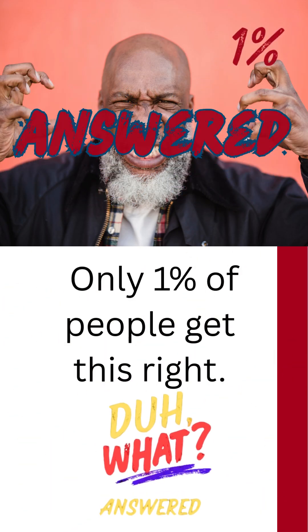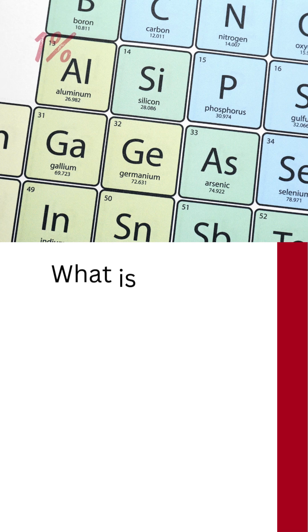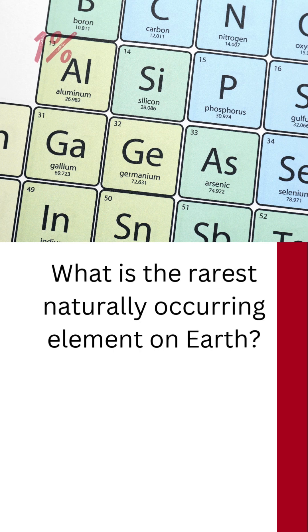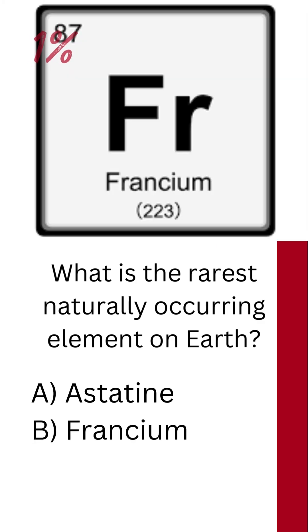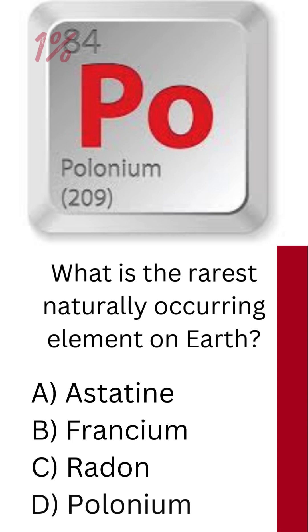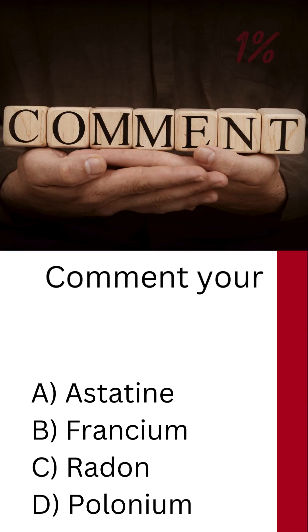Only 1% of people get this right. What is the rarest naturally occurring element on Earth? Is it A. Astatine, B. Francium, C. Radon, or D. Polonium? Comment your answer below.